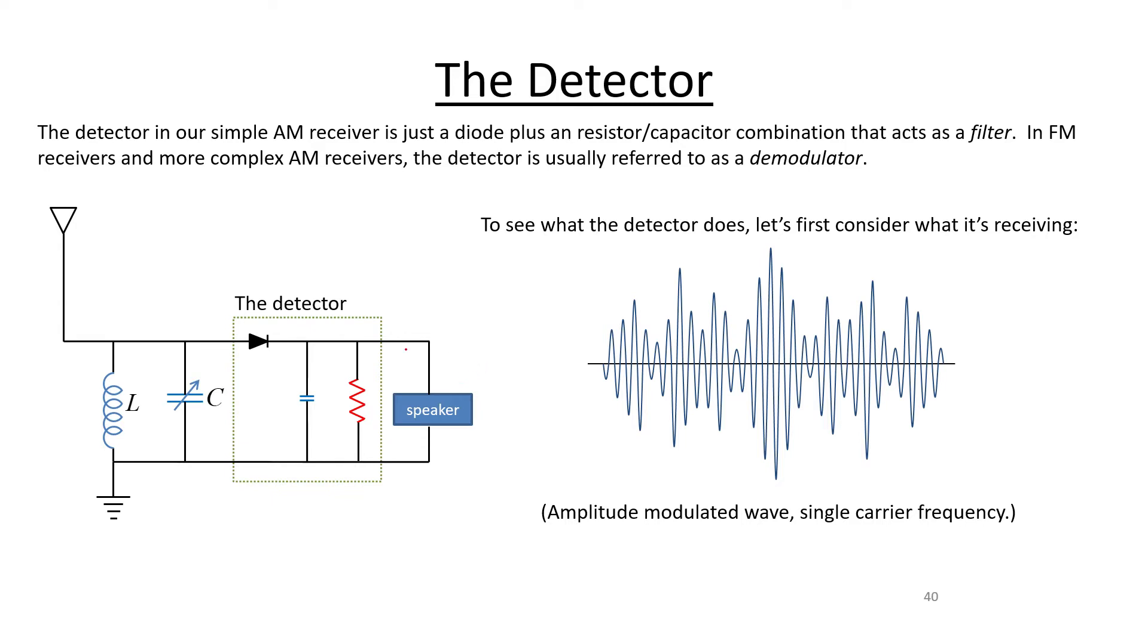We've got some carrier wave that has come through the LC combination, our tuner, and been selected out versus all the other carrier waves that are hitting the antenna and inducing a voltage wave on that antenna. So bunches of different frequencies here up in the antenna, followed by just one carrier wave coming over here into this last portion of the circuit.